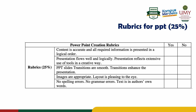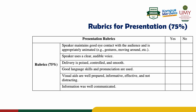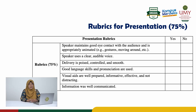Next, the rubrics for presentation. First, you have to maintain good eye contact with the audience and be appropriately animated — for example, gestures, moving around, and others. You are also supposed to use a clear, audible voice so that the audience can understand what you say, and your delivery should be poised, controlled, and smooth.